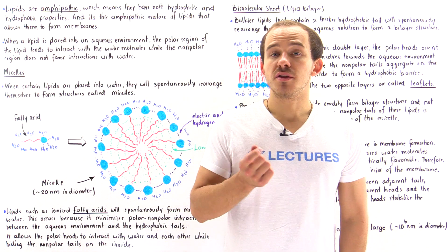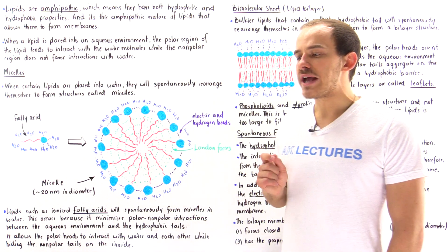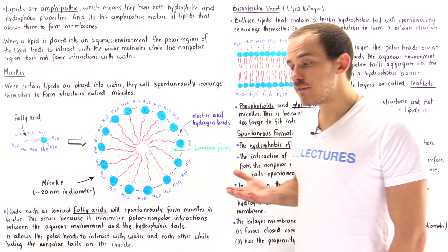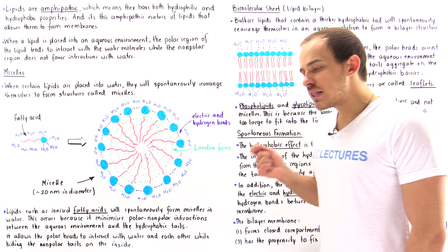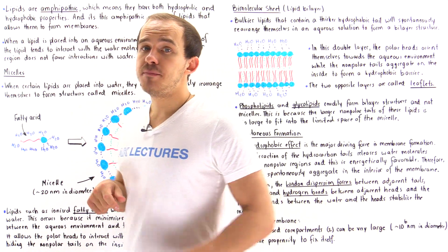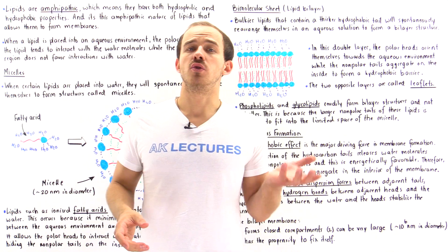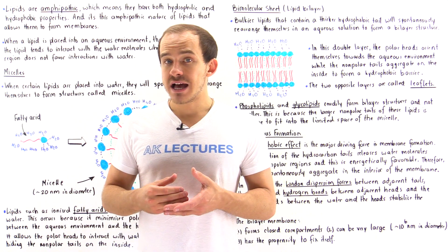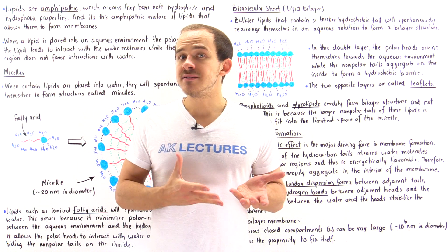Lipid molecules are the major constituents of cell membranes, but the question is why? What makes lipids perfect for cell membranes? Well, remember that lipid molecules are amphipathic, meaning they contain a polar region and a non-polar region, and it turns out that it's the amphipathic nature of lipids that gives them the propensity to actually form these cell membranes.